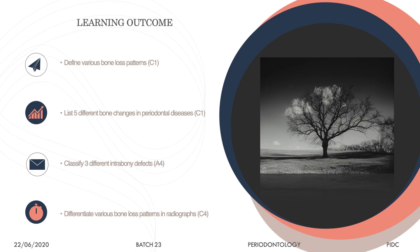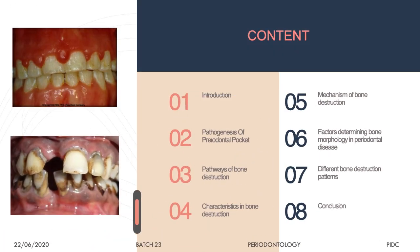Today's learning outcomes are: identify different bone loss patterns, list five different bone changes in periodontal disease, classify three different intrabony defects, and differentiate various bone loss patterns in radiographs. The content includes introduction, pathogenesis of pocket formation, pathways of bone destruction, characteristics and mechanism of bone destruction, factors determining morphology of periodontal disease, and different types of bone destructive patterns.